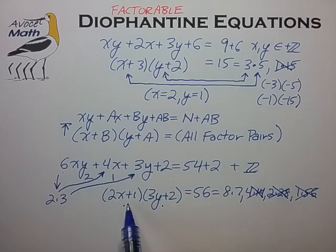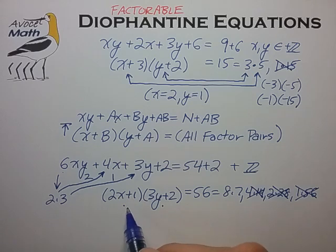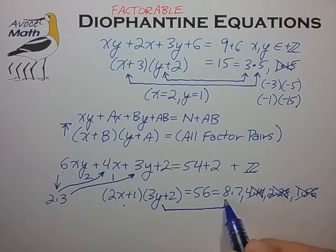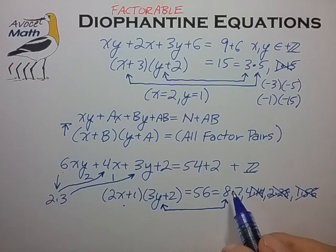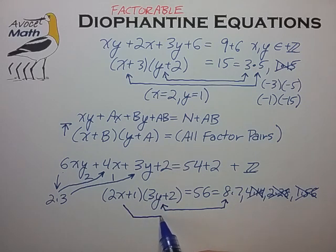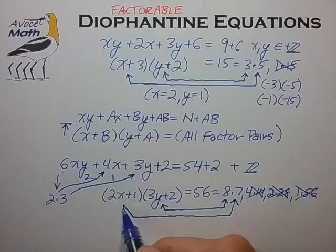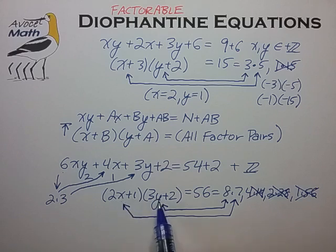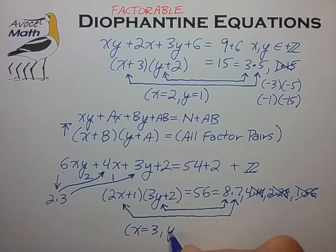Since the left factor has to be odd no matter what, the factors have to match up with the factor pair where 3y plus 2 equals the even number and 2x plus 1 equals the odd number. It then remains to find values of x and y satisfying positive integers, and in this case we can: x equals 3 and y equals 2 is the one unique solution. So with that, go ahead and try some of the example problems, and I'll see you with the next video. Take care.